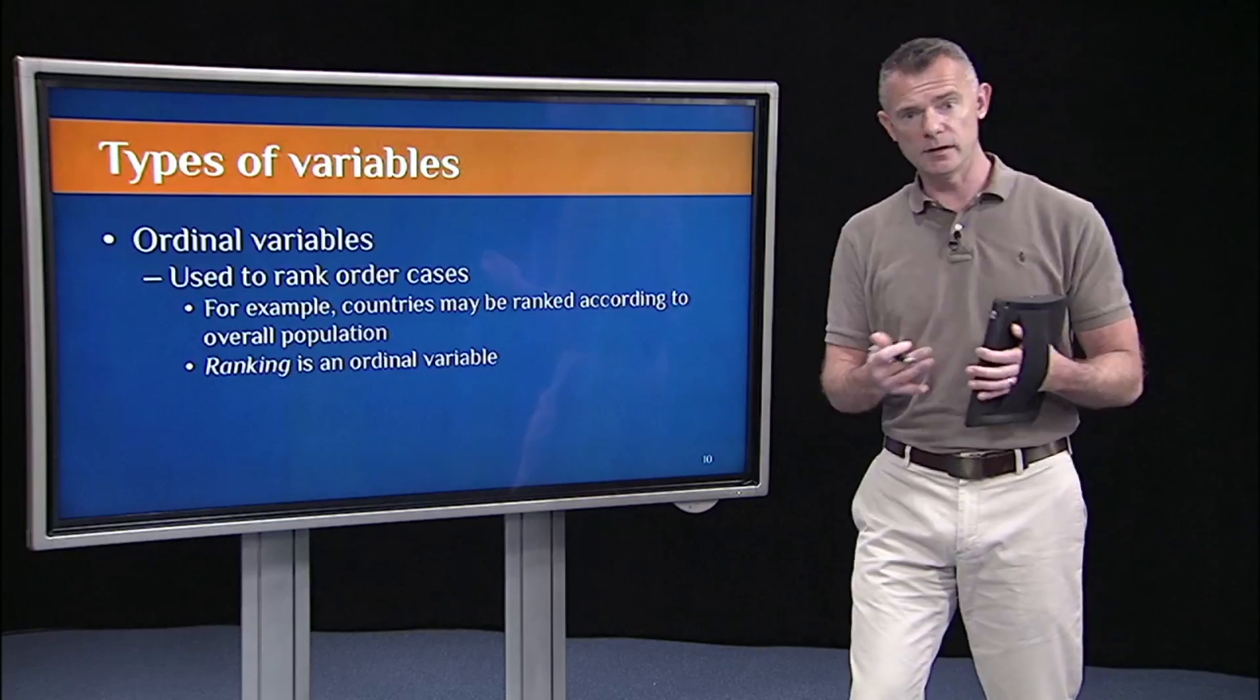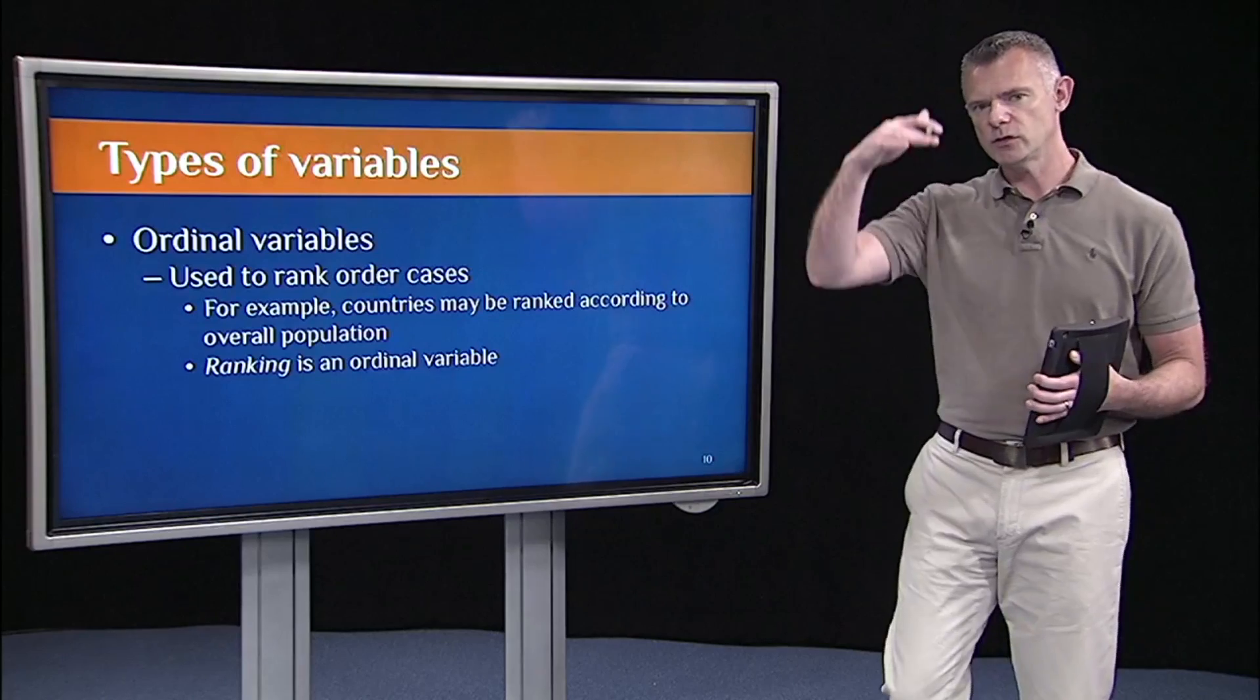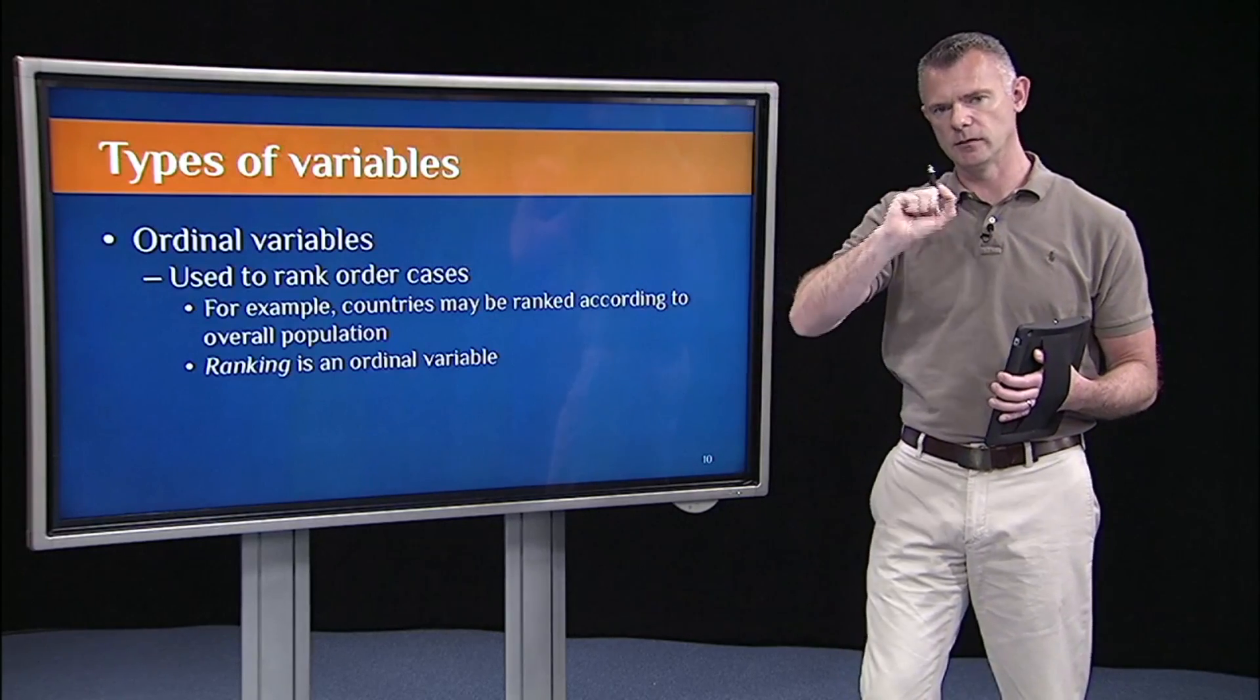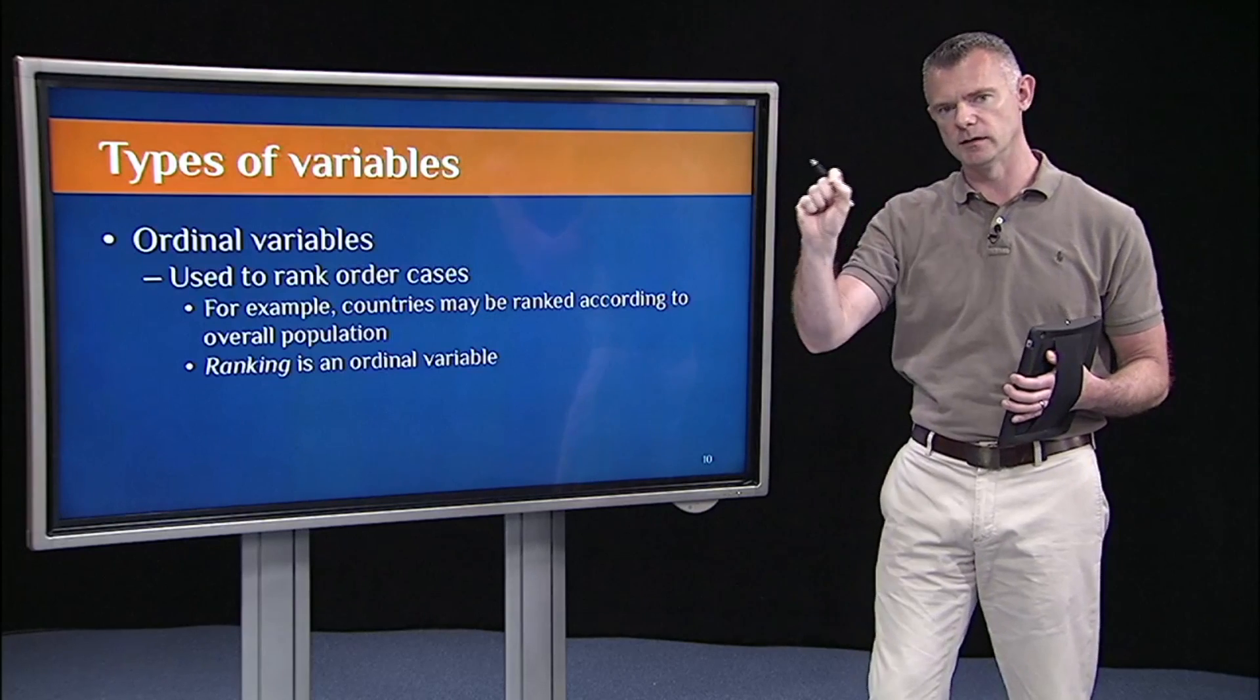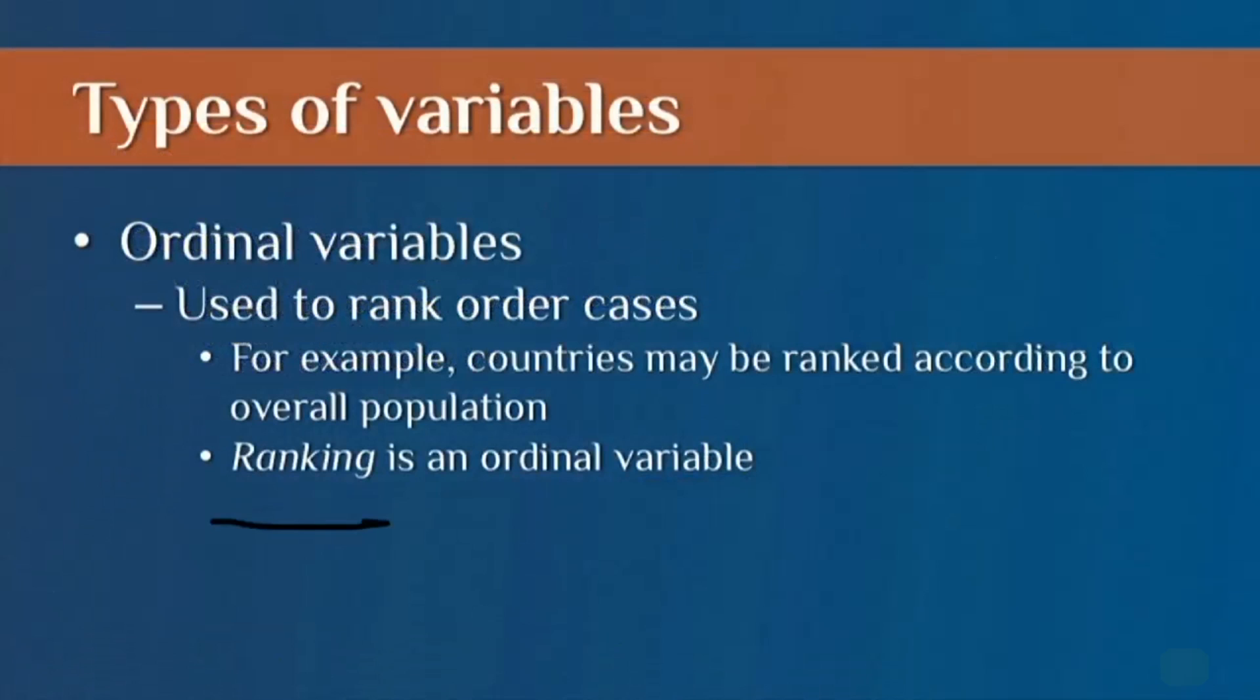say like France, or a really small country like Luxembourg, have smaller populations. If I just wanted to rank order them in terms of who has the highest population, they get a number one. Who has the second highest population, they get a number two. Then ranking would be an ordinal variable.